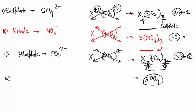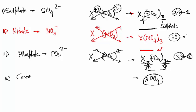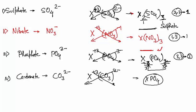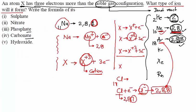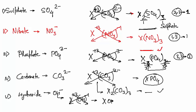The fourth one is carbonate. Carbonate is CO₃²⁻. We have X³⁺ and CO₃²⁻. Cross multiplying gives X₂(CO₃)₃ — the element name followed by carbonate. The last one is hydroxide: OH⁻. We have X³⁺ and OH⁻ (charge −1). Cross multiplying gives X(OH)₃.